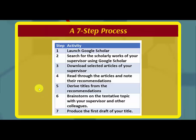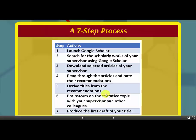The first step is to launch Google Scholar. Then, step two: search for the scholarly works of your supervisor. Please note that in our last lesson we said it is best to focus in the area where your supervisor is currently working. Step three: download those works to your hard drive or local drive. Step four: offline, read through the articles and note the recommendations. Step five: derive your titles from those recommendations. Step six: brainstorm on the tentative topic with your supervisor. Step seven: produce the first draft of your title.